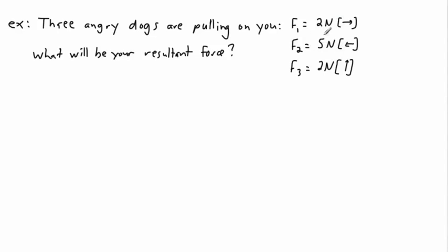They're not necessarily trying to hurt you. I don't want to advocate any sort of problems with dogs. Some dogs are very nice, of course. But let's take a look at this anyway. So we have three angry dogs pulling on you. We have one force of two newtons going to the right. Another dog is giving you a force of five newtons to the left. And then we have a third dog giving a force of two newtons straight up. So if that's the case, then we might say, what's the resultant force? In other words, what's the net force?